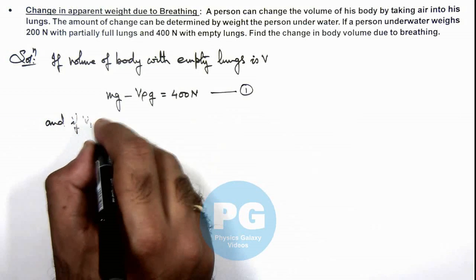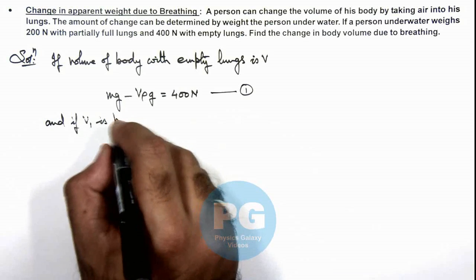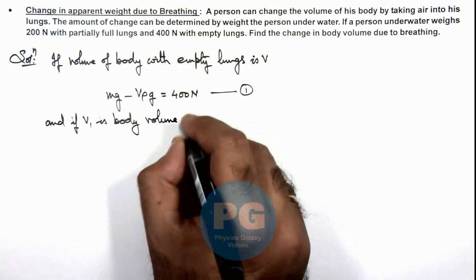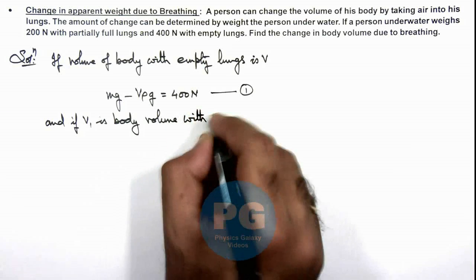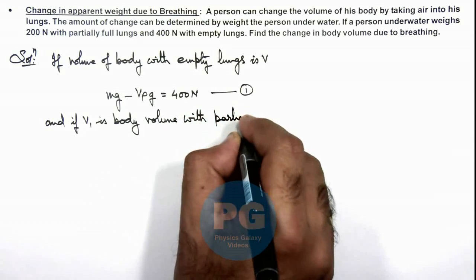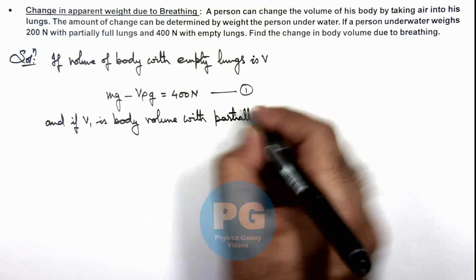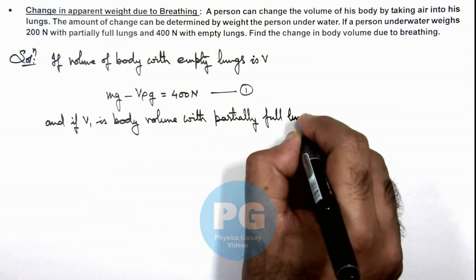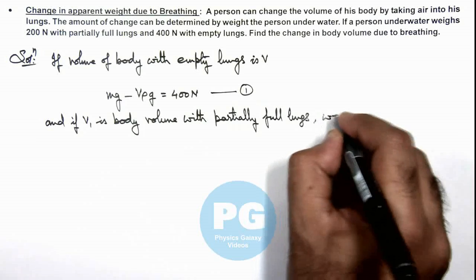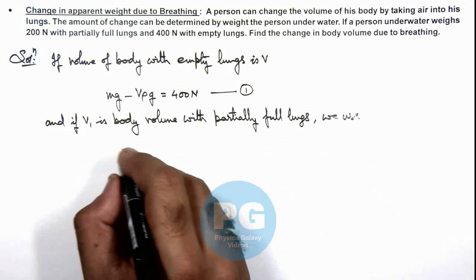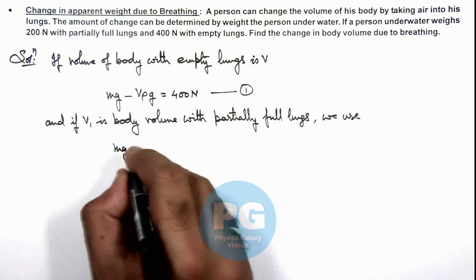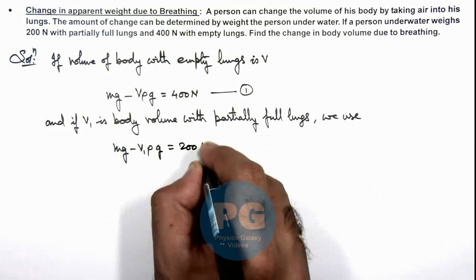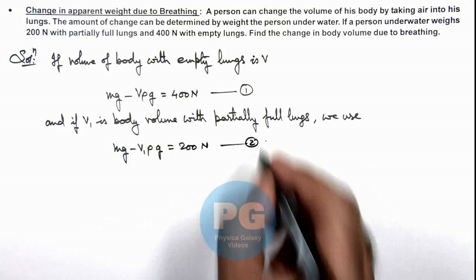And if V1 is the body volume with partially full lungs, then we use: m·g minus V1·ρ·g should be equal to 200 newton. That is the second equation.